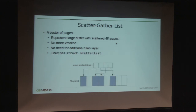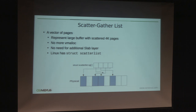The solution is to use scatter-gather lists. As you can see from the picture, we use an array of scatter-list structures — an array of pointers pointing to scatter pages. This way we don't need to have a linear address buffer, we don't need to use virtual address space, and we don't need to go to the slow vmalloc, so we can get rid of the slab layer.